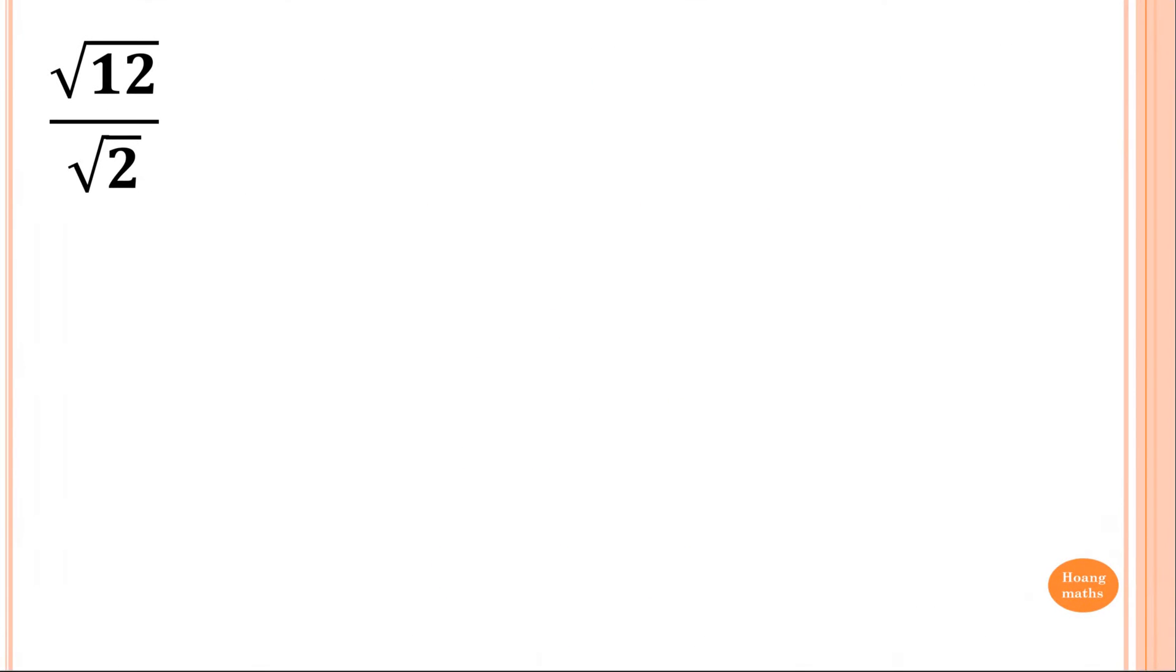Let's go through a few examples to make it clear. Square root of 12 over square root of 2. So 12 over 2 is 6. Therefore, it's 12 over 2, which means 12 over 2 is 6. So the answer is square root of 6.